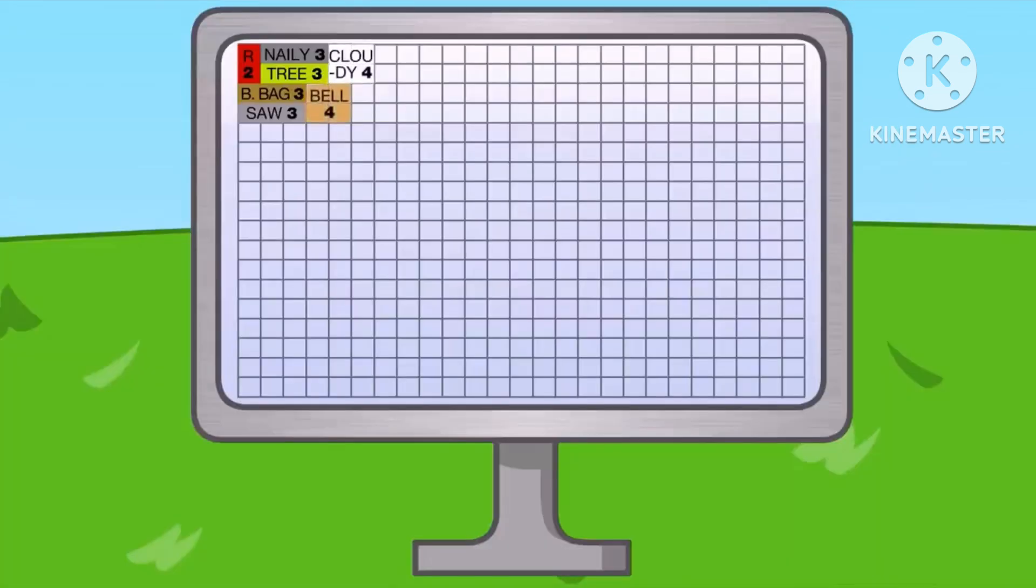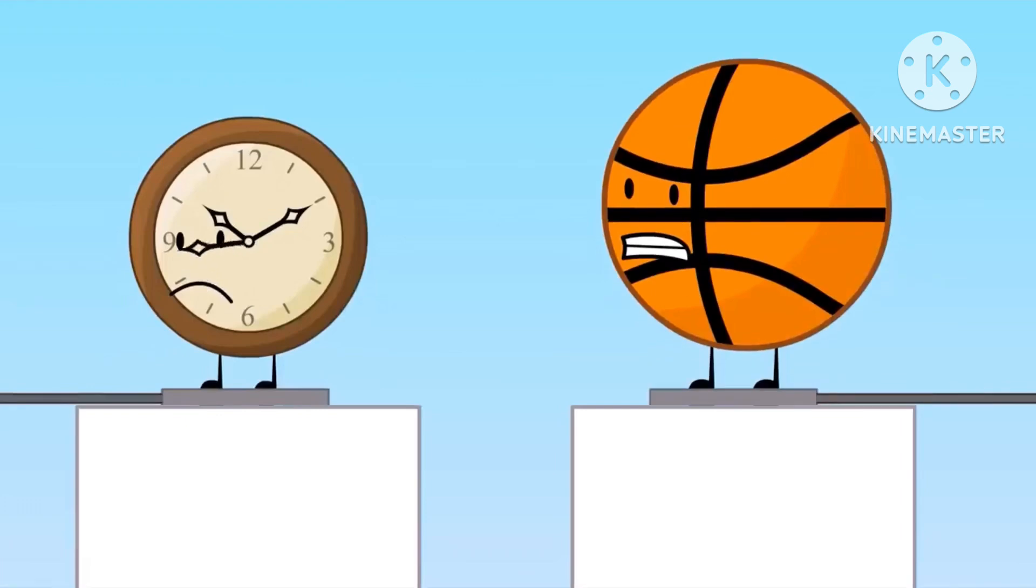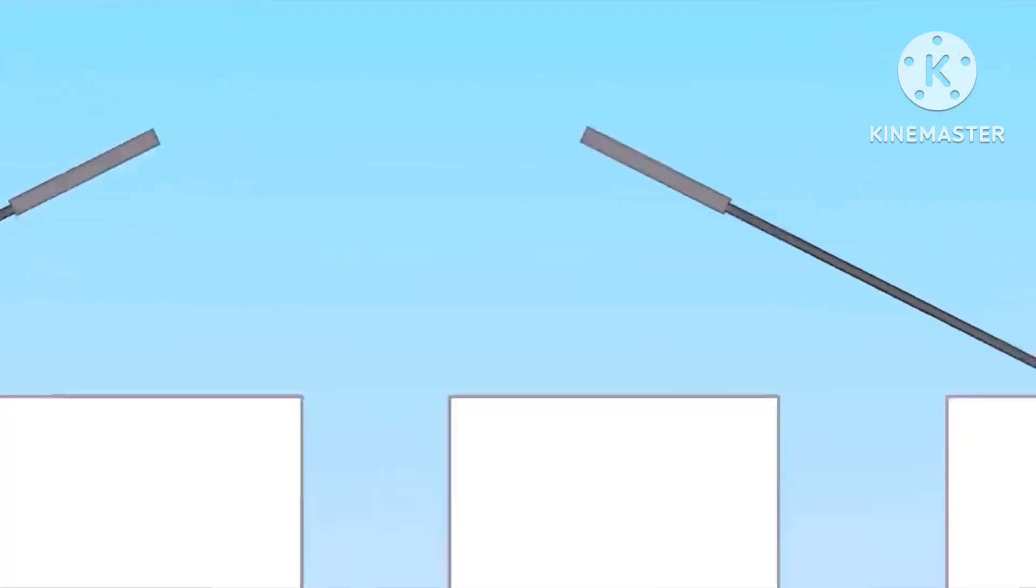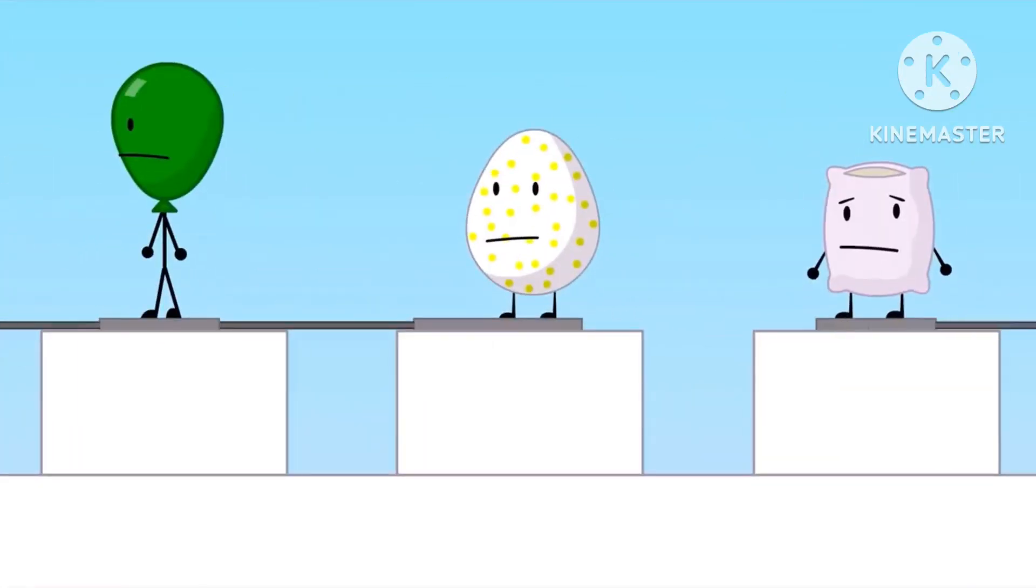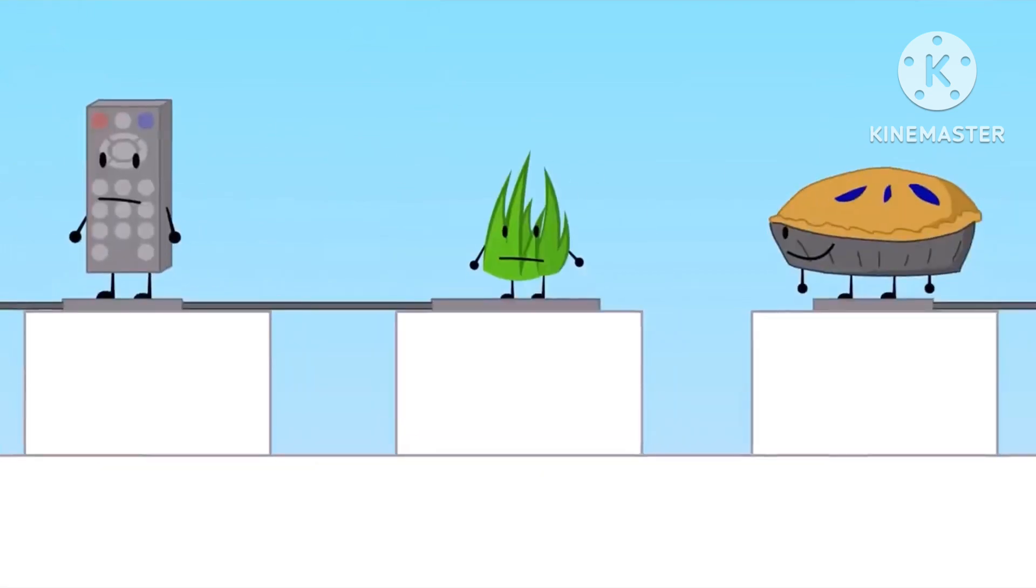Cloudy and Bell only got 4 votes each. Clock and Basketball got 5 votes each. Balloony, Eggie, and Pillow got 6 votes each. Remote, Grassy, and Pike got 7 votes each.